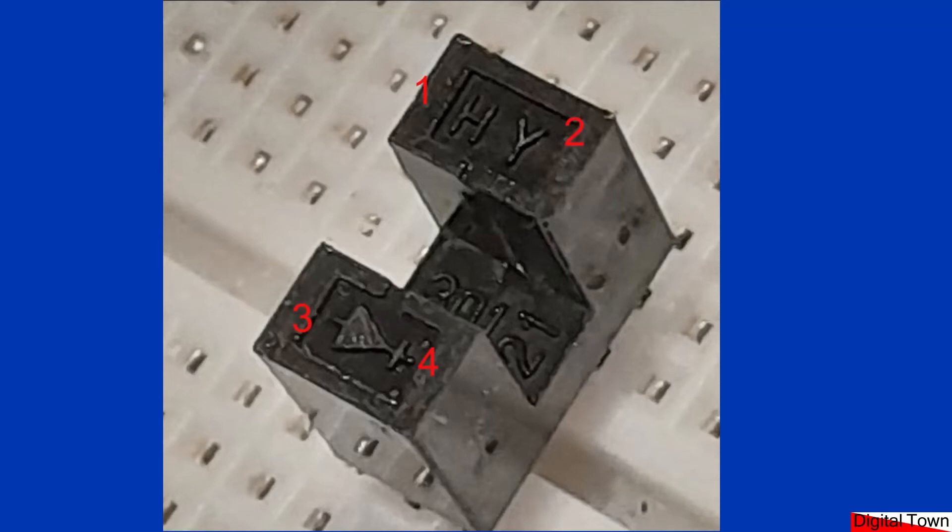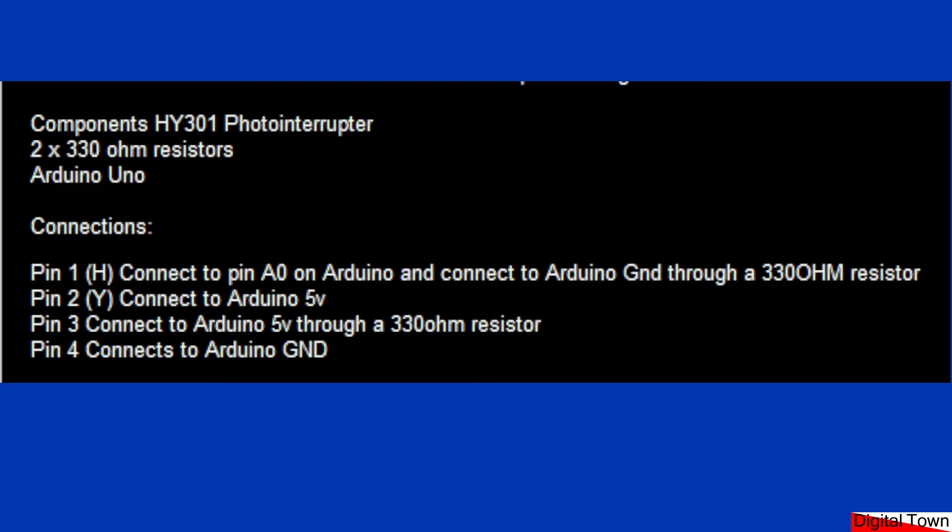So let's get on with the wiring. I tried to do a fritzing diagram but unfortunately I couldn't find the appropriate component. The photo interrupter I'm using is an HY301. This circuit will work with most of the ones that I've tried, but that's the one that's in the picture. I've got two 330 ohm resistors and I'm connecting to an Arduino UNO. On pin 1, which has got the H on top of it, that connects with one wire to analog pin zero on the Arduino and also connects to ground through a 330 ohm resistor, so it's basically acting as sort of a pull down resistor. The Y pin just connects to your Arduino five volts.